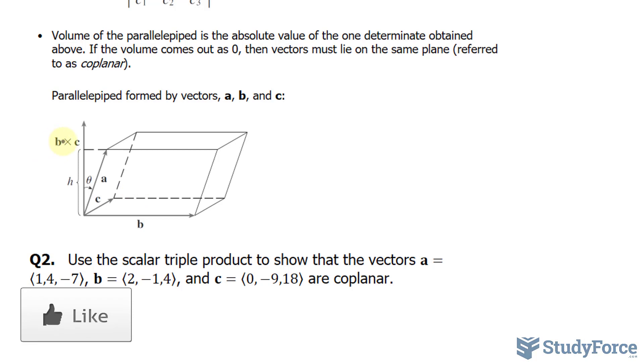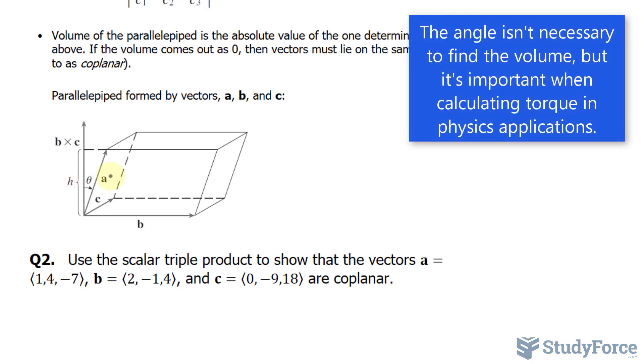The cross product vector, b times c, is perpendicular to both b and c. And the angle which is formed between the cross product vector and a is theta. That can be used to find the height of the parallelogram. Now, of course, we can generate a formula using the information found here, but there's an easier way.